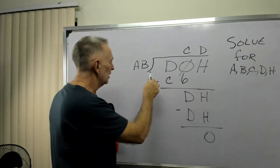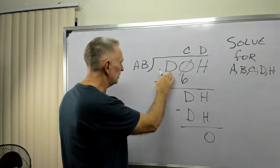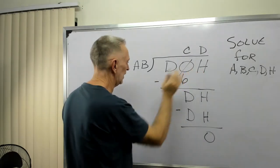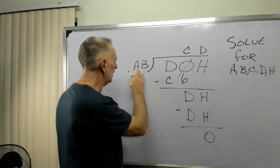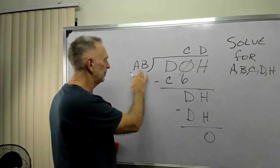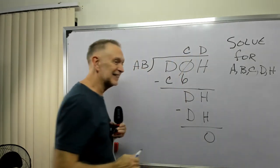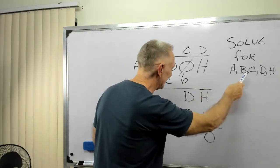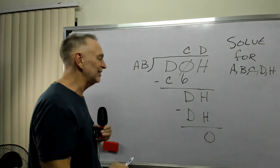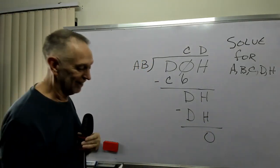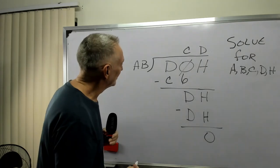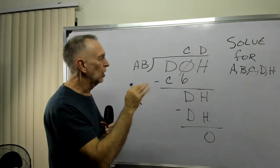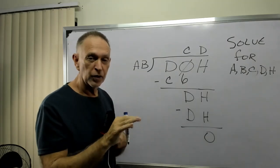Tonight we have the number D0H divided by AB, and it equals CD. And we're trying to solve for A, B, C, D, and H. Is that not crazy? As we normally do, let's walk through the process.